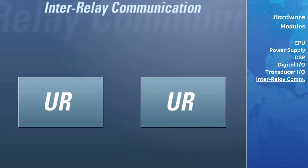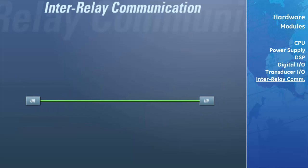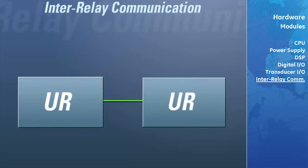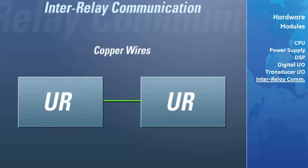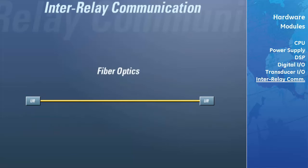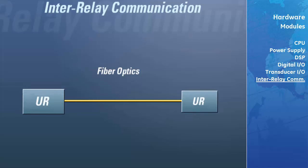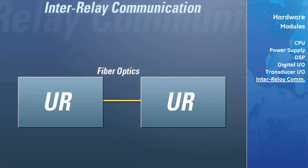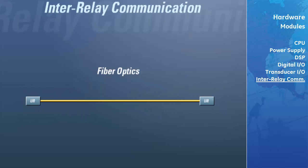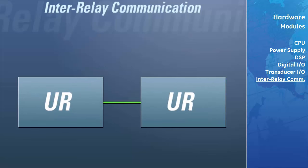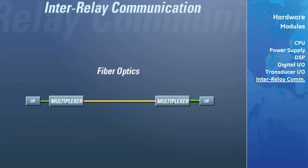The inter-relay communication modules are used to transfer data between different UR relays located within the same substation or separated by very long distances. The communications link between two URs can be made through copper wires using G.703 or RS422 protocols, or through fiber-optic cables, of which there are five different types. These modules can be ordered with a single or dual communication terminal connection. Fiber-optic options are normally used for very long distances, whereas copper wire options are used for short distances or when the link will be connected to higher-order communication systems such as multiplexers.